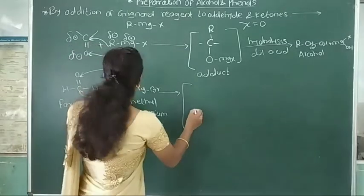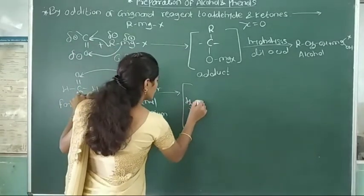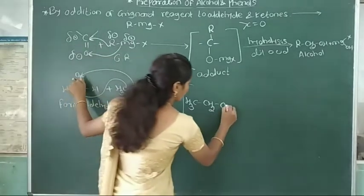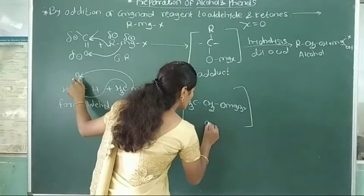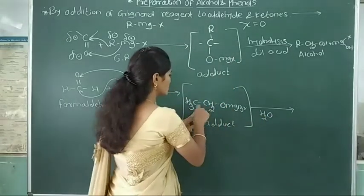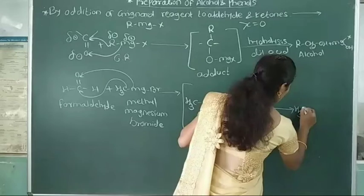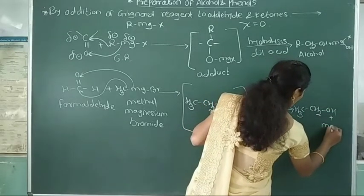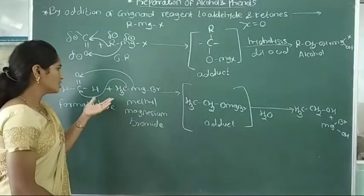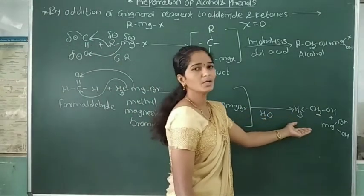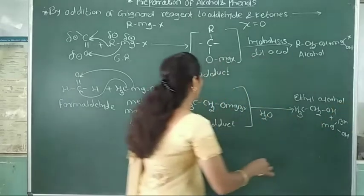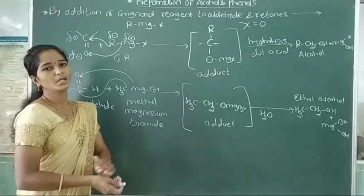The methyl group from methylmagnesium bromide is added into the carbonyl carbon, with CH3 on carbon and oxygen carrying MgBr. This gives the adduct, which undergoes acid hydrolysis to form CH3CH2OH (ethanol) plus MgBrOH. By using formaldehyde reacting with Grignard reagent, we get formation of a primary alcohol — ethyl alcohol.